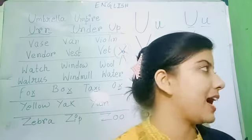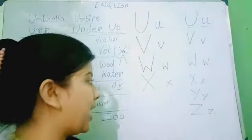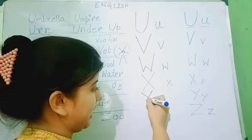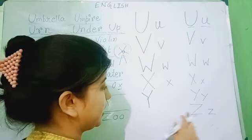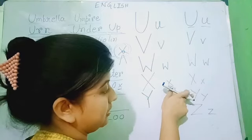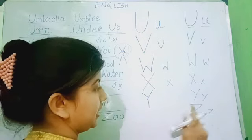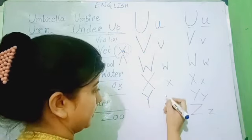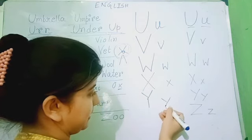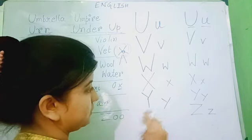Now, we have Y. This is capital Y and this is small y. Let's write them. First, a slanting line, then another slanting line, and one straight line. This is capital Y — you can also write it this way. And the small y: one slanting line, another slanting line. This is small y.